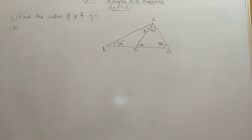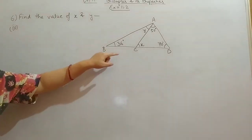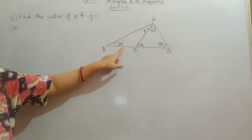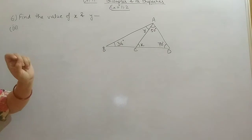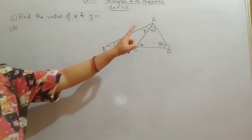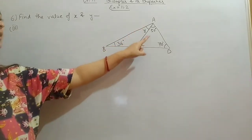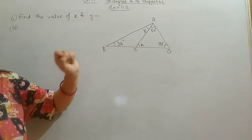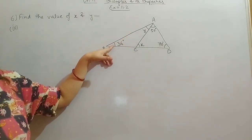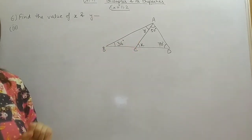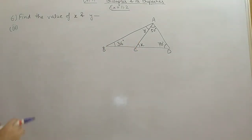Next is the third part of question 6. In this figure, we have two triangles — it is a combination of two triangles. First, you have to see in which triangle we have more information. In triangle ACD, we know two angles and need to find the third. In the other triangle, only one angle is given. So triangle ACD has more information and we start from here.